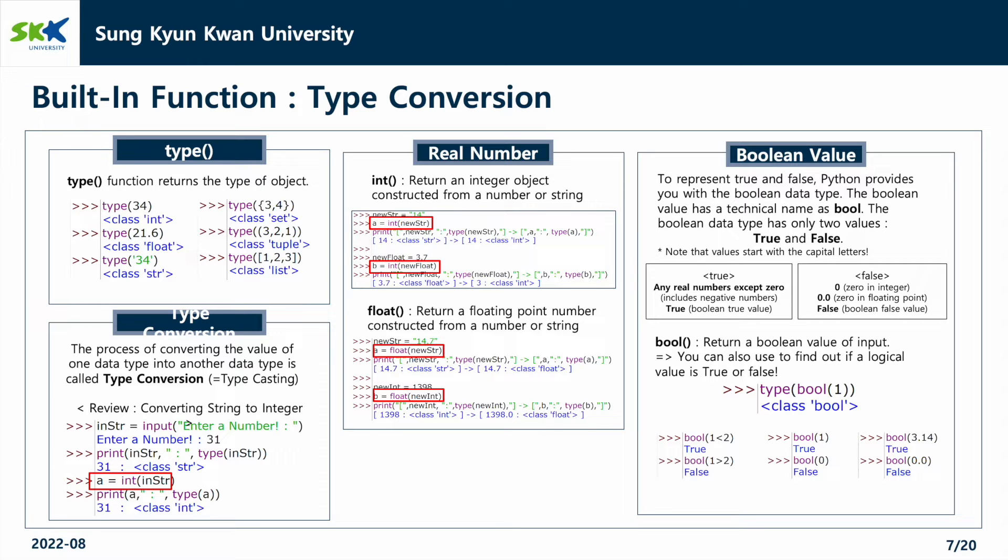First, the type function returns the type of object. For example, type of 34 is expressed as int and type of 21.6 is expressed as float. Second, type conversion is the process of converting the value of one data type into another data type, which can be considered as typecasting. The method is to wrap the variable you want to change in the desired data type. As shown in the example, if the string type variable is wrapped in integer, the type is converted to an integer type.